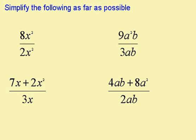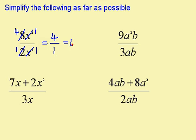To do these questions, I'm going to look for common factors and cancel. Here we have a common factor of 2. 2 goes into 8 four times, and 2 goes into 2 once. We've got a common factor of x squared here. x squared goes into x squared once, and x squared goes into x squared once. So I now have 4 times 1, which is 4, over 1 times 1, which is 1. 4 divided by 1 gives me 4.